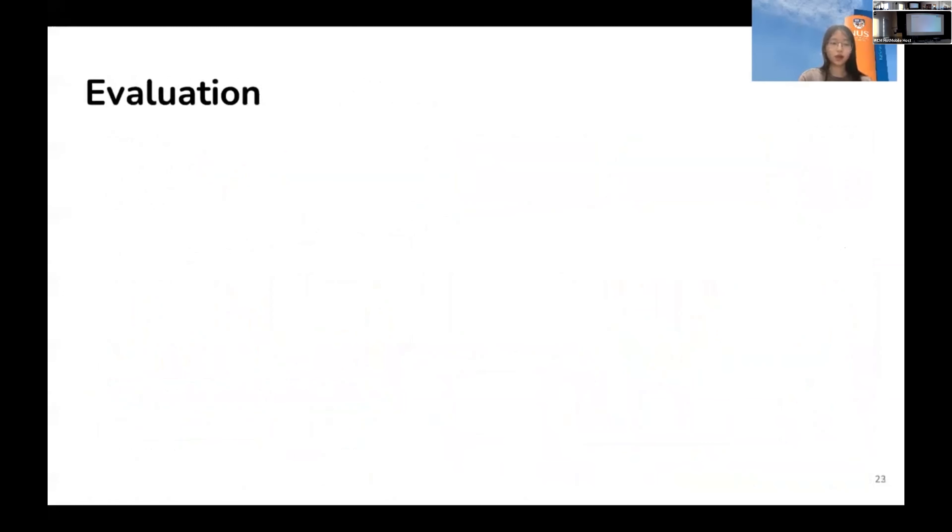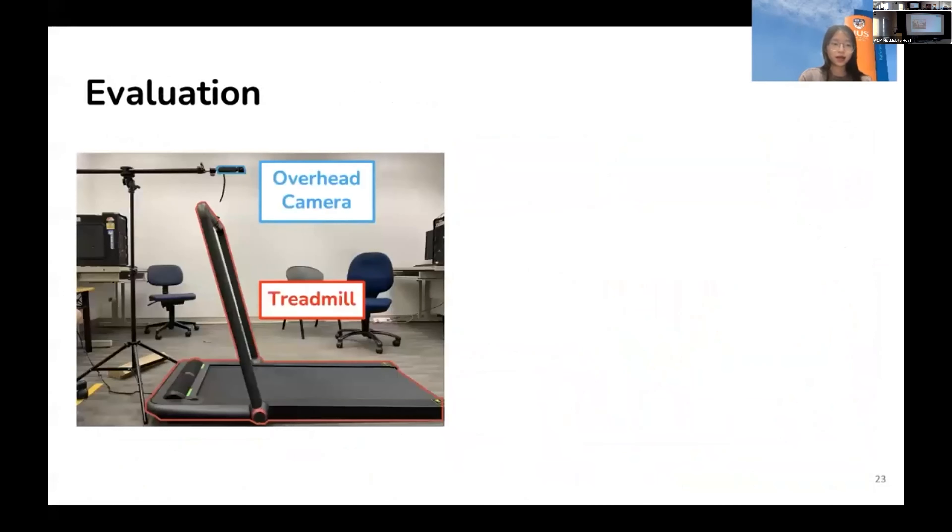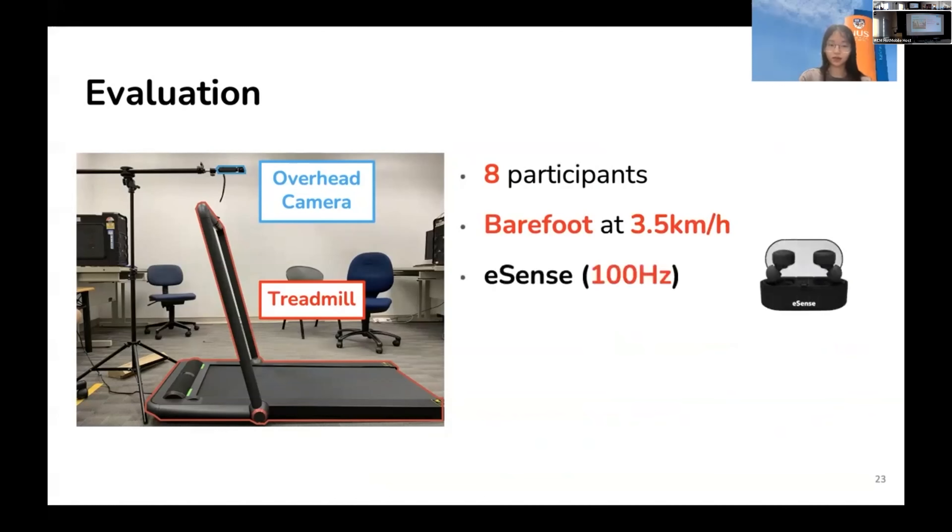Now, we go on to our evaluation. We collect data on the treadmill and use an overhead camera to capture participants' foot to get the ground truth of the foot position. We experiment with eight participants. All the participants walk barefoot on the treadmill at 3.5 km per hour. The data is collected using eSense from Nokia, with the sampling rate roughly 100 Hz. We let participants simulate normal, toe-in, and toe-out postures. Each posture consists of 10 trials of simulation, with each trial lasting for two minutes. Then, for each trial, we randomly divide gait cycles into two groups for enrollment and identification, respectively.